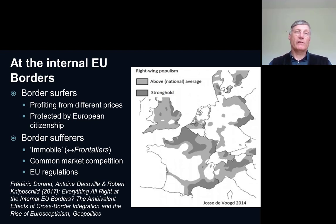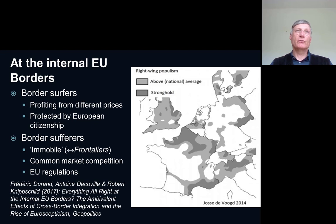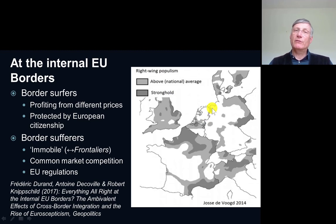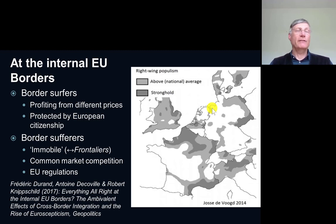The border surfers are widely present, but many people suffer from common market competition. For instance, housing prices in the German part of the Dutch-German border area — on the eastern side of the Netherlands and west side of Germany — show a competition on the housing market between Dutch people who move to Germany because houses are relatively cheap there, and the local German population who suffer from the price-rising effect of that migration.